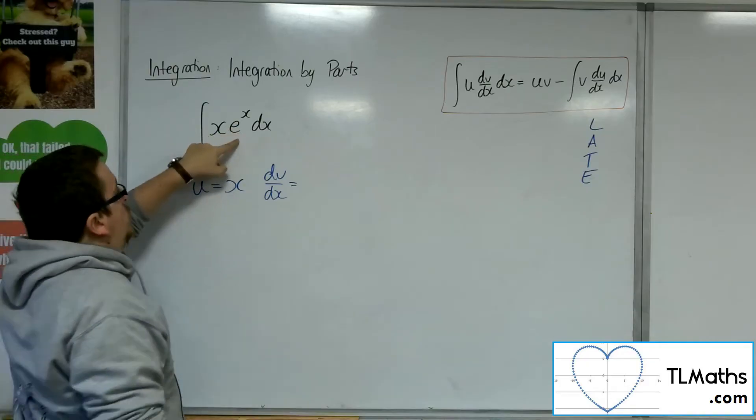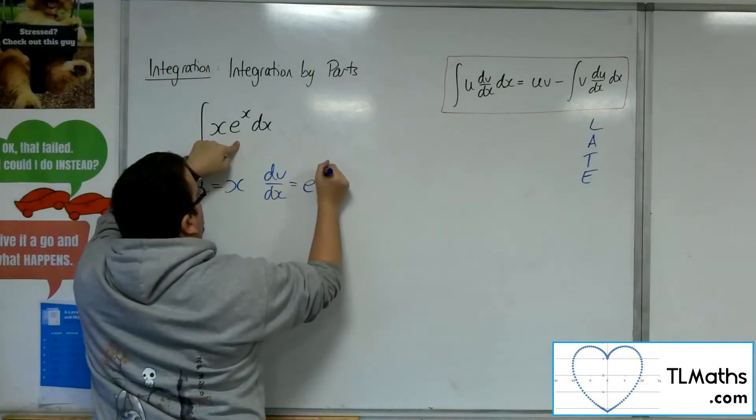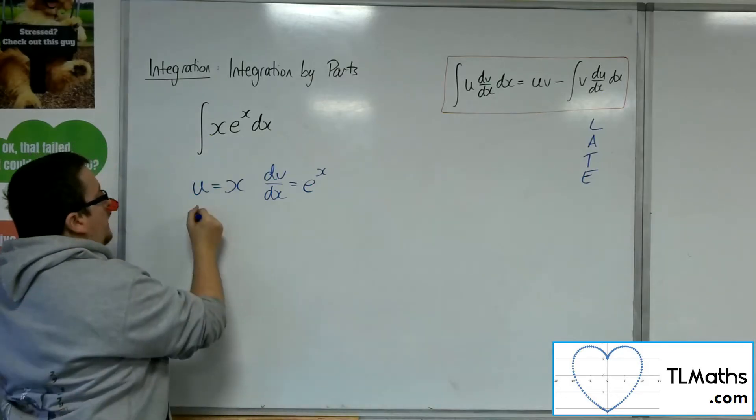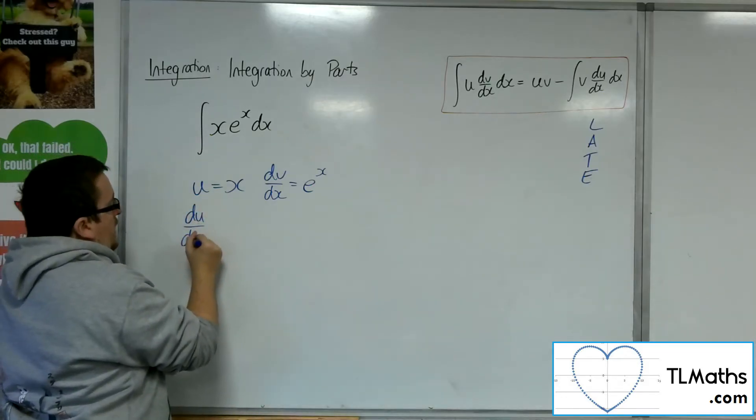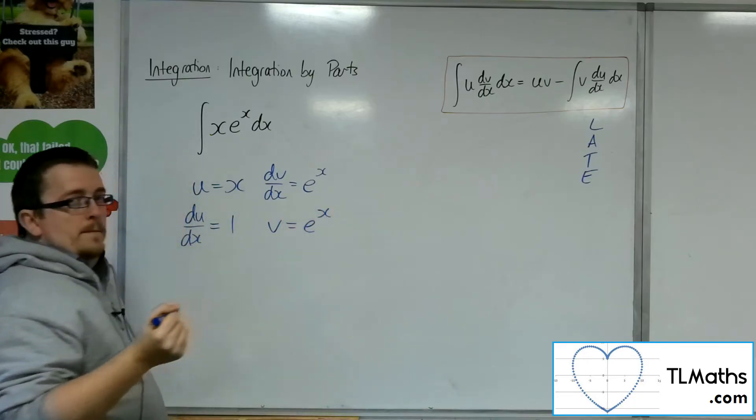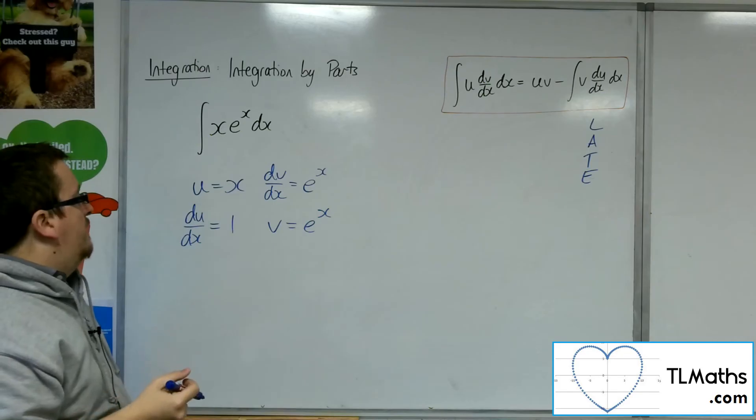And so the exponential comes second, and so that's the dv by dx. I want to differentiate the u. I want to integrate the dv by dx to get v.